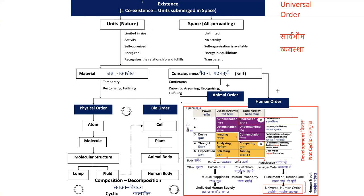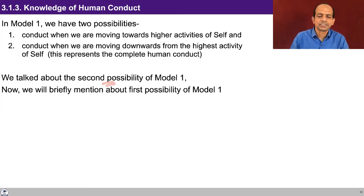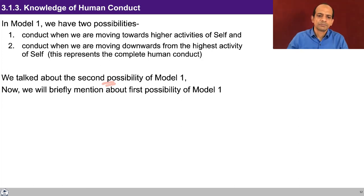The same thing can be expressed in this manner. We have this understanding of the entire existence, and the self which is in the process of development is able to have the right conduct. While discussing human conduct, we mentioned that there are two possibilities: conduct when we are moving towards higher activities of the self, and the second possibility when we are moving downwards from the higher activity of the self. This represents the complete human conduct. We have talked about the second possibility — with realization, understanding and contemplation being awakened — and now we briefly try to understand what model one is with the first possibility.